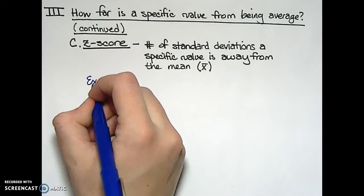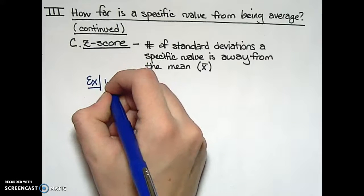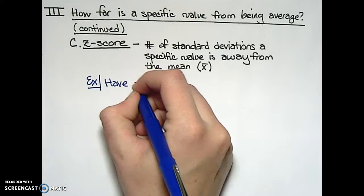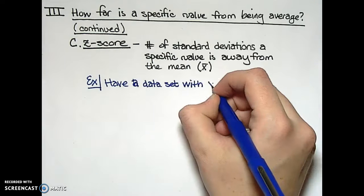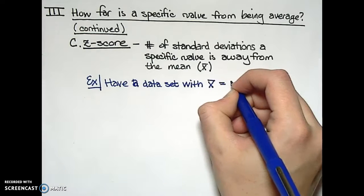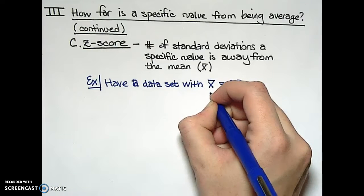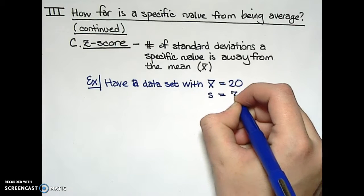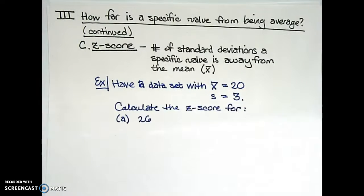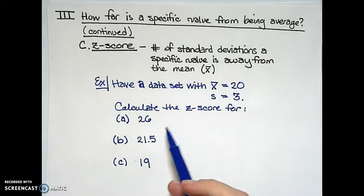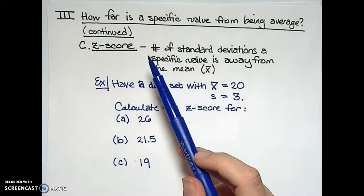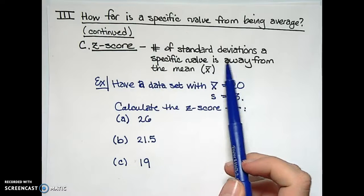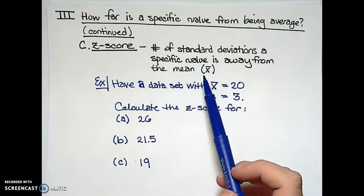Suppose in our first example that we have a data set with a mean of 20 and a sample standard deviation of 3. For this sample data set, let's go ahead and calculate the z-score for the three values: 26, 21.5, and 19.